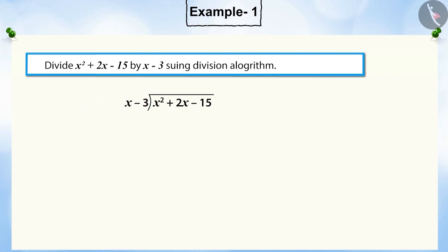In the previous video, we saw that to get the first term of the quotient, we divide the term with the highest power of the dividend, i.e. x squared, by the highest power of the divisor, i.e. x. This gives x, which is the first term of the quotient.